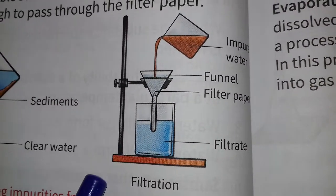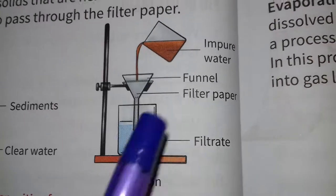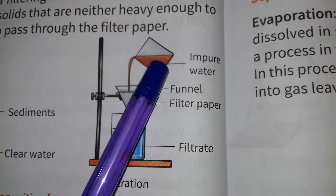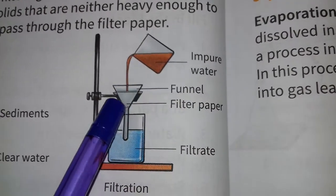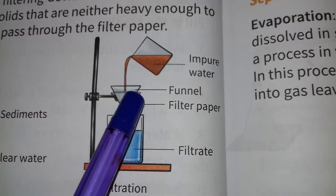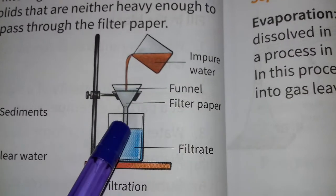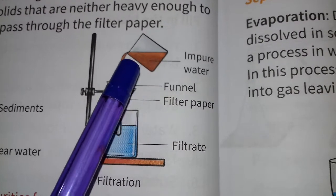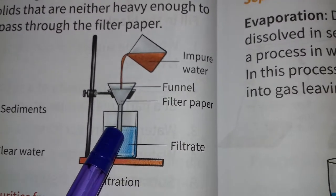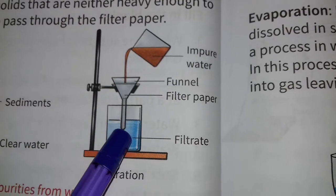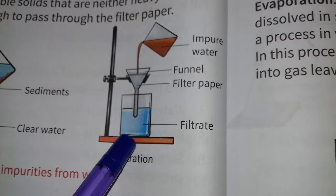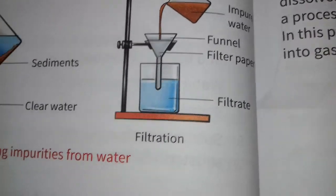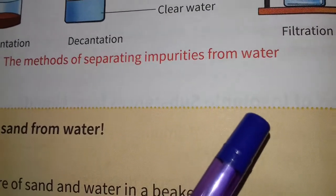Here you can see the filtration process. Impure water is poured through a funnel. There is a filter paper, and when the impure water passes through the funnel and filter paper, it gets filtered and we get clear water. These methods are used for separating insoluble solids from liquids.